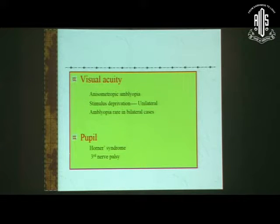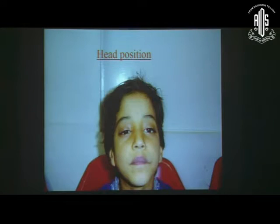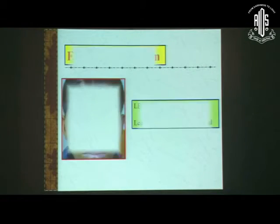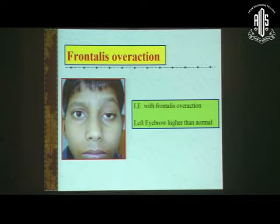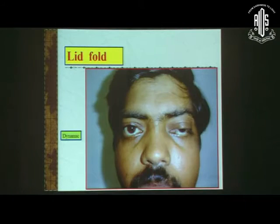Pupil is important to rule out Horner syndrome and third nerve palsy. Second is head posture — as already mentioned, bilateral ptosis leads to a chin-up position. Frontalis overaction has to be carefully looked for, like in this patient with left eye severe ptosis.